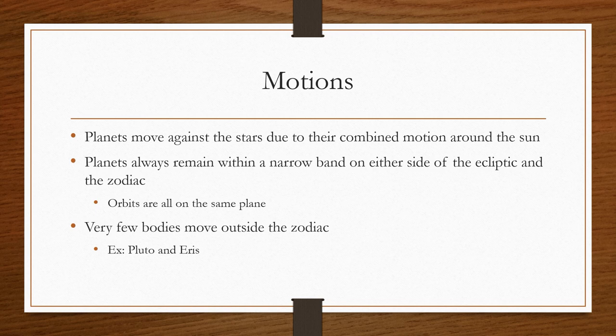We're going to talk about the motions that planets have. Planets move against the stars, basically as if stars were a background, because of a combination of their orbital motion around the sun and how slow the stars move relative to us. It almost looks like planets move and the stars don't. The planets will always remain within a narrow band on either side of the ecliptic and the zodiac. There are very few bodies that actually move outside of the zodiac, and that is Pluto and Eris.